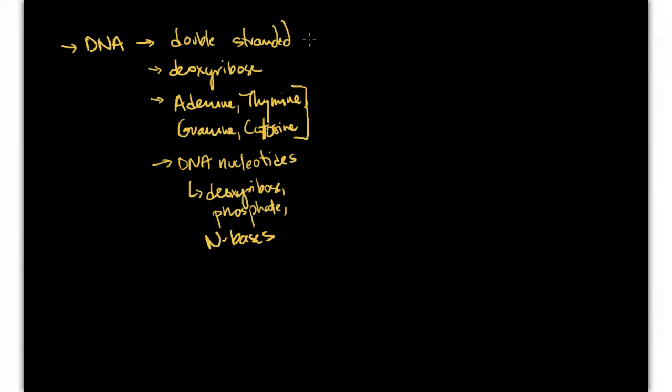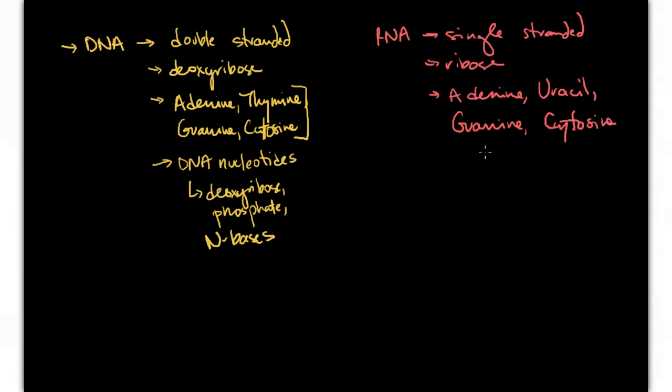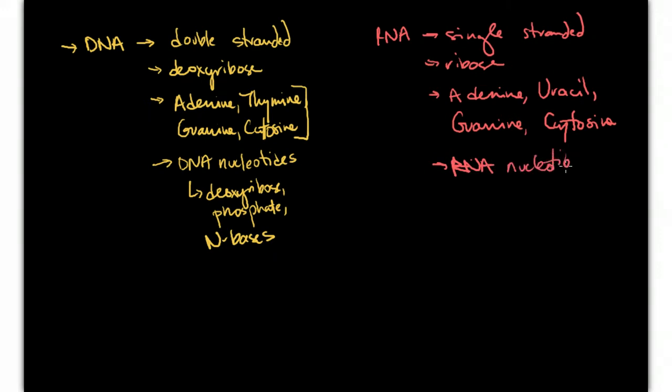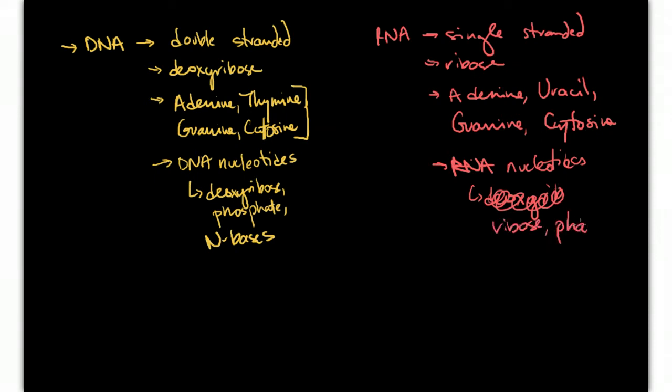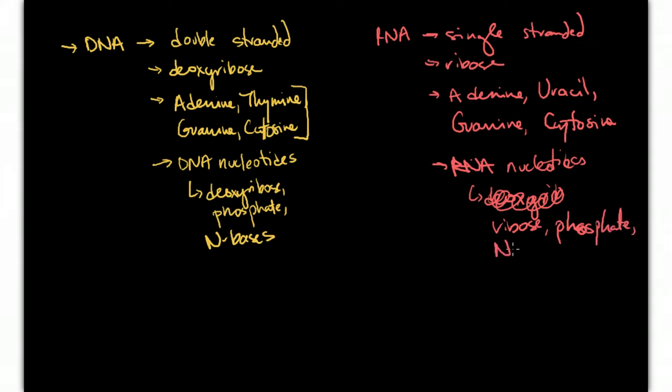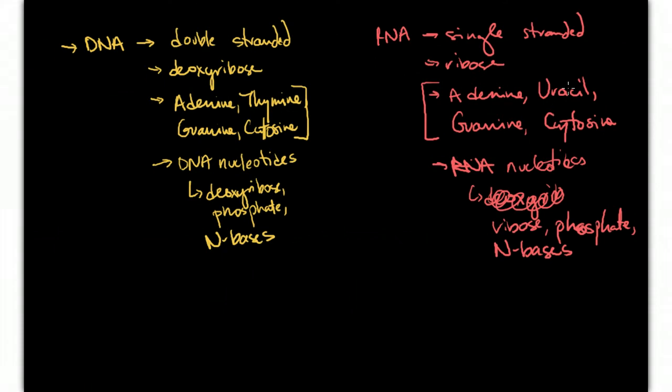We're talking about RNA. Make sure you know what it stands for. It is single-stranded. It has ribose. It has adenine, uracil, guanine, and cytosine. It's made of RNA nucleotides - ribose, phosphate, and nitrogen bases. But make sure you understand that these are the nitrogen bases and that there's a difference between the uracil and the thymine.